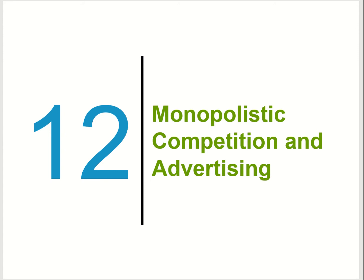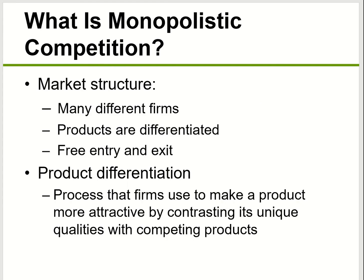Just by the name, monopolistic competition is somewhere like a hybrid — in the middle between monopoly and perfect competition. So what is monopolistic competition? This is the market structure with many, many companies. They produce differentiated goods and there's free entry and free exit. Also known as product differentiation.